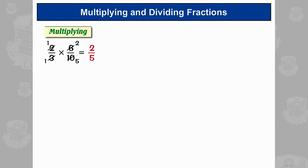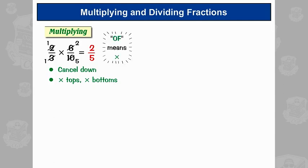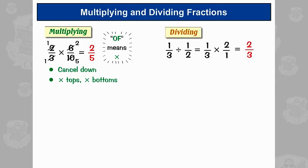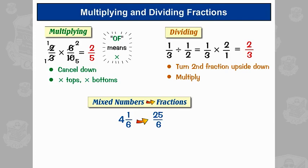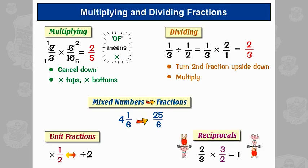Let's summarise what we've seen. For multiplying fractions: cancel down first if you can, then times your tops by your tops and your bottoms by your bottoms — and remember, 'of' means times. For dividing fractions: turn the second fraction upside down and then multiply. With mixed numbers, always turn them into fractions first. Unit fractions: timesing by a unit fraction is the same as dividing by what's on the bottom. And reciprocals are upside-down versions of each other — multiply them together and you always get 1.